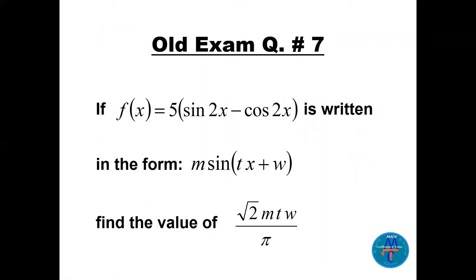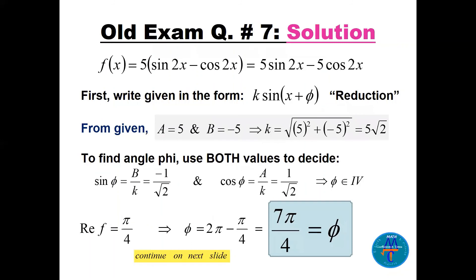Question number seven: the function is 5·sin(2x) − cos(2x), and it needs to be written in the form m·sin(tx + w). We also need to find √2 · m · t · w / (m · t · w / π). Since we have sine and cosine added/subtracted, we use a reduction identity to convert this to a single sine function.